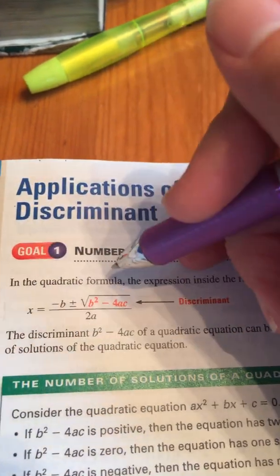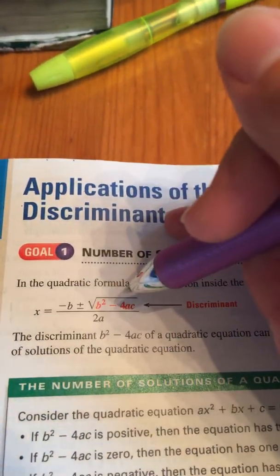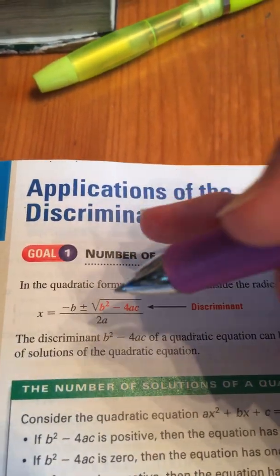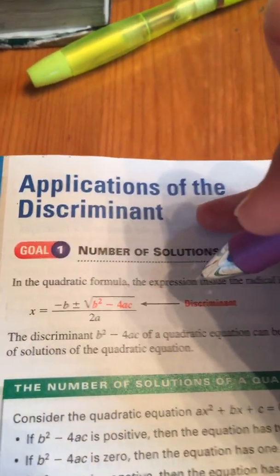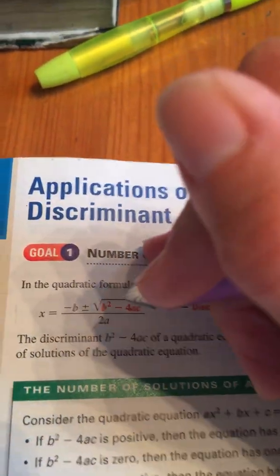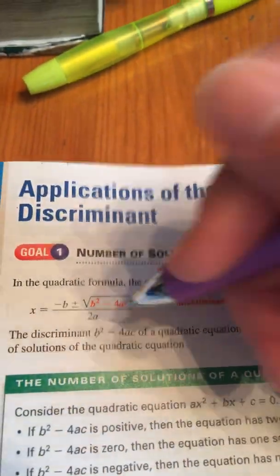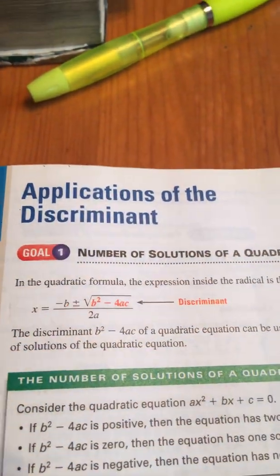And before you solve the whole thing, you would solve the discriminant because if it's a negative number, then it means that there were no real solutions because you can't take the square root of a negative number. And you could write no solutions and go on to the next problem. So it was great. I loved it when there was a negative number there. No solutions, you got to quit.